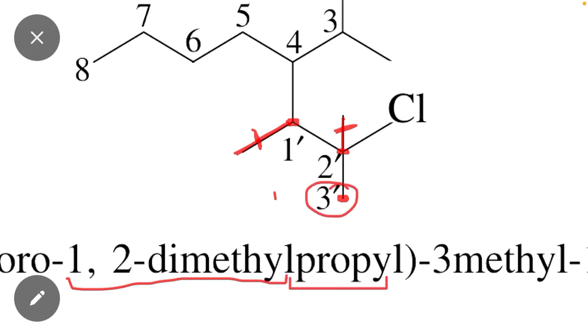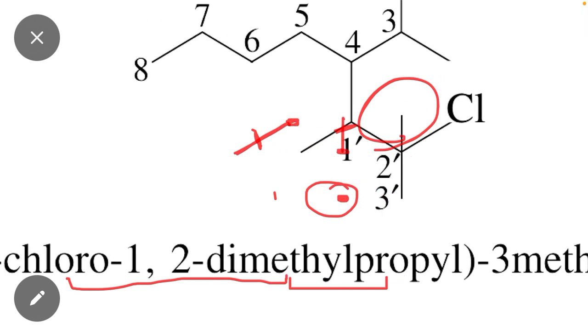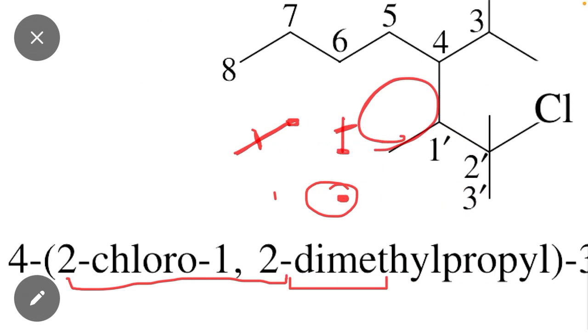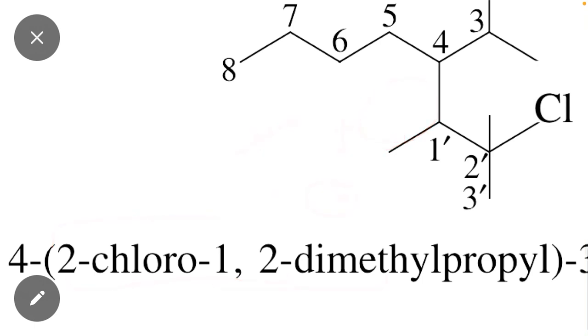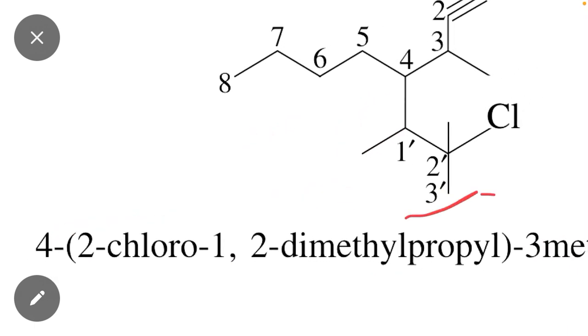But chloro is present at position 2. Here you can see that it's 2-chloro. The name of this substituent is 2-chloro-1,2-dimethylpropyl.